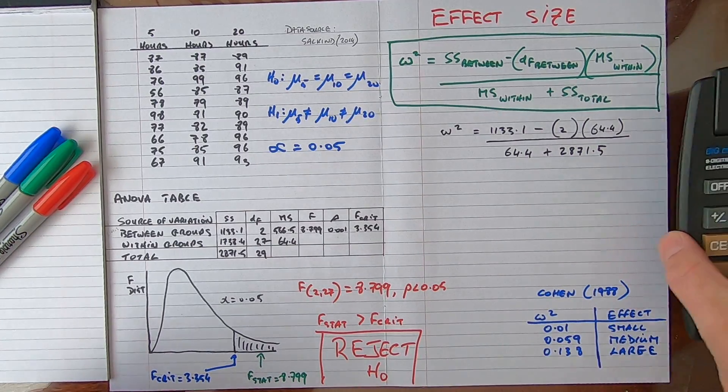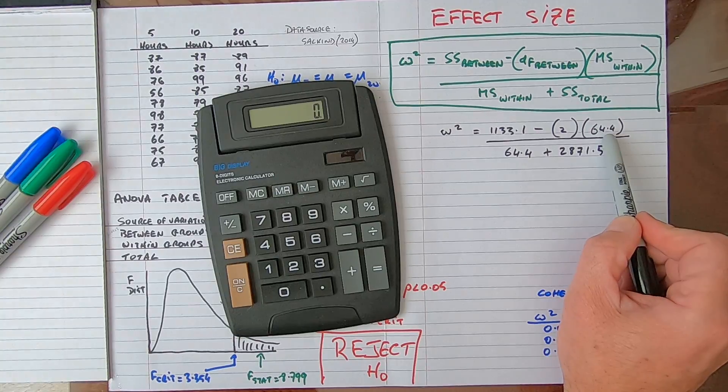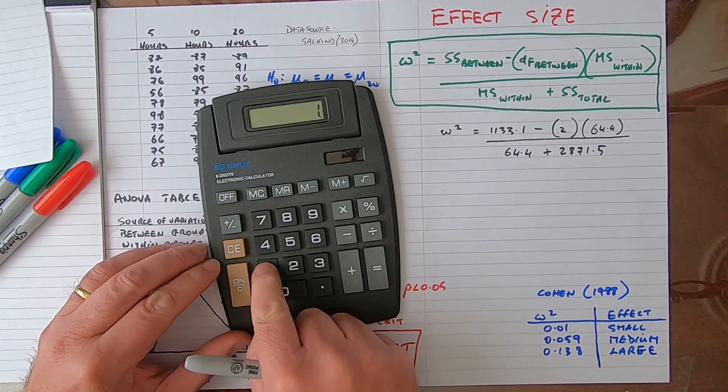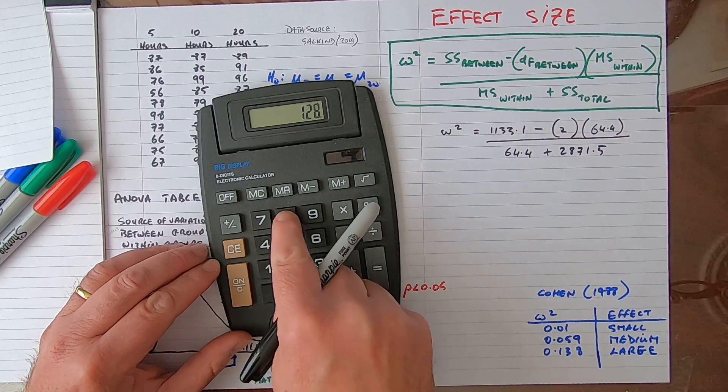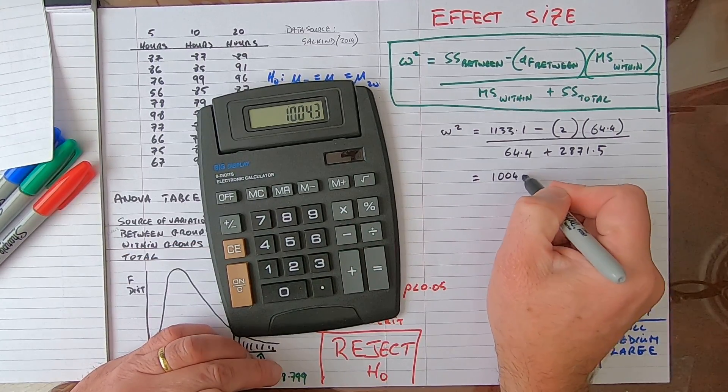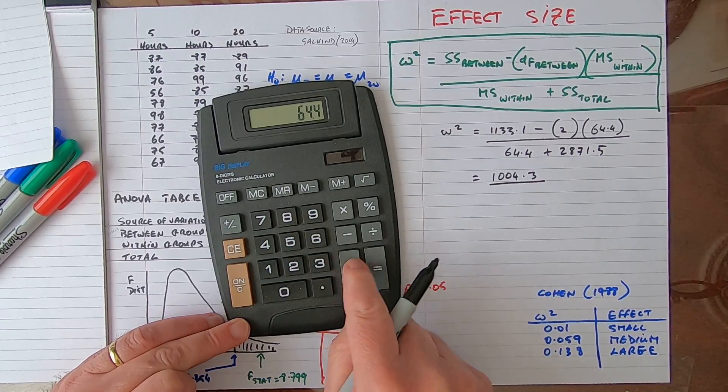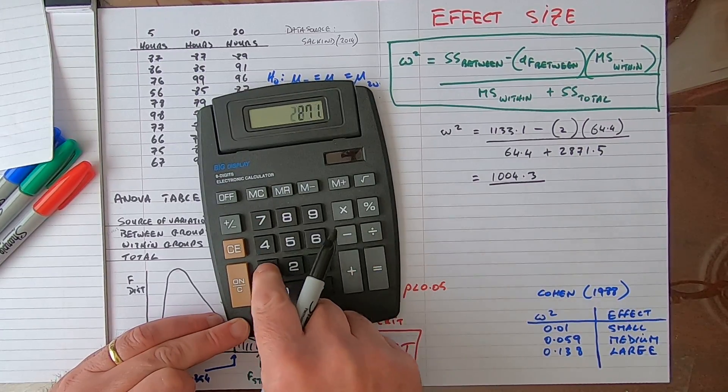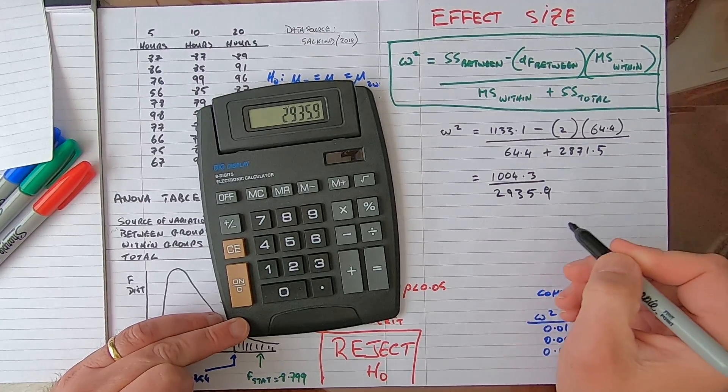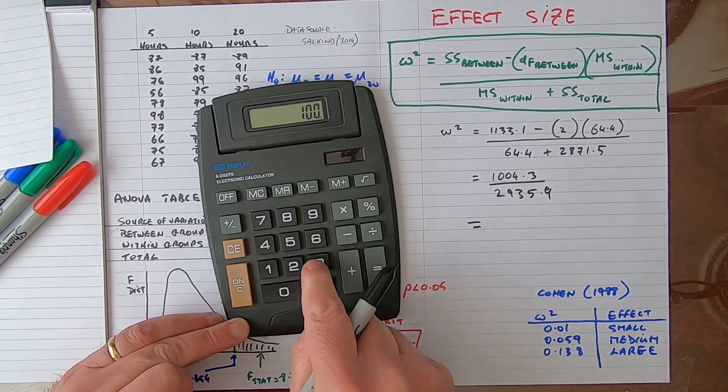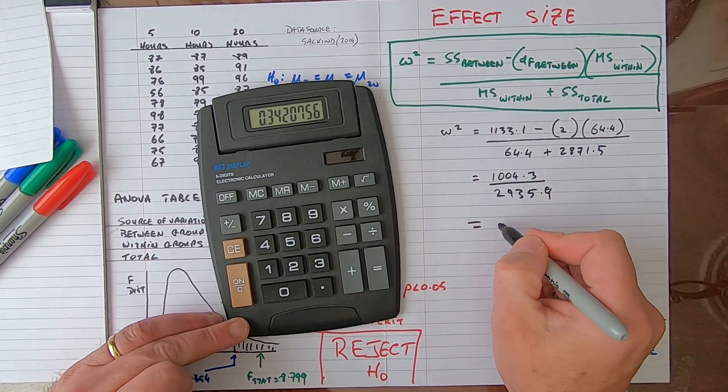Let me get my calculator and start to work all of this out. Two times 64.4, that's straightforward, I'll do that in my head, so that's going to be equal to, I'm going to start on the top line, 1133.1 minus two times 64.4 which is 128.8, that is equal to 1004.3. Now work out the bit underneath: 64.4 plus 2871.5, that is equal to 2935.9.